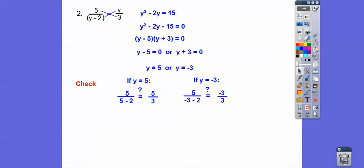Let's check, you guys. So plug in y equals 5 right here and right here. That's what this says right here. 5 over 5 minus 2 is 5 over 3. That checks. Over here 5 over negative 3 minus 2 is negative 5. 5 over negative 5 is negative 1. Negative 3 over negative 3 is also negative 1. So those check out. So 5 and negative 3 are our answers.